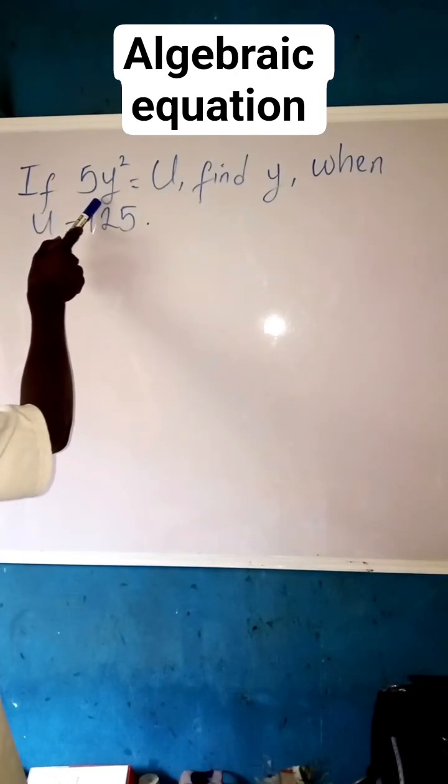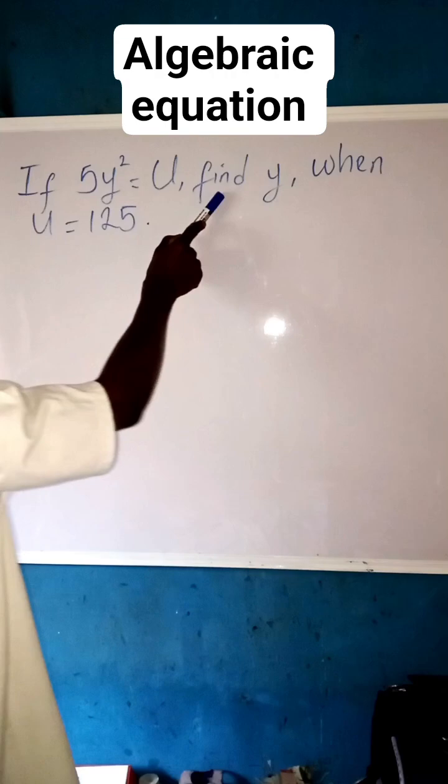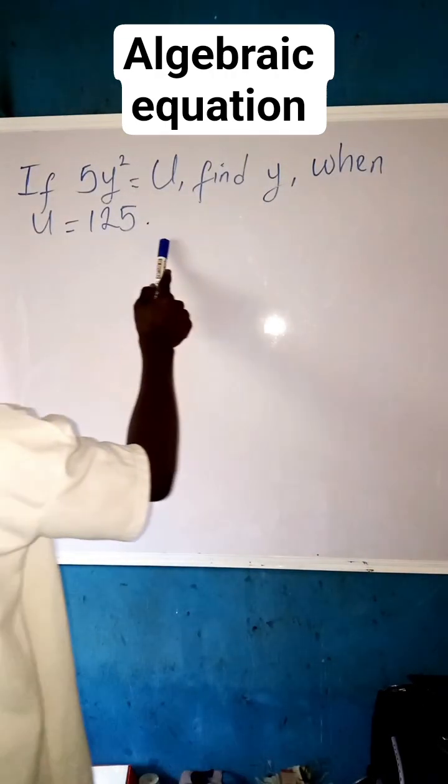If 5y squared equals to u, find y when u equals to 125.